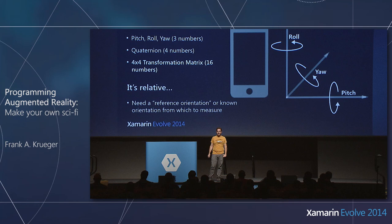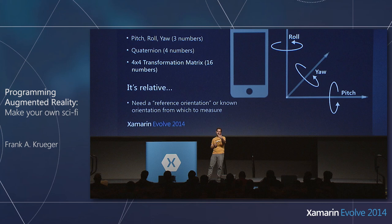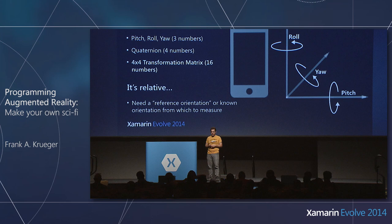Most programmers aren't familiar with the crazy mathematics behind orientations and rotations. We all like to think of Euler angles — pitch, roll, and yaw. These are easy to conceptualize, but once you start really angling the phone into awkward positions, these three values don't combine very well. All sorts of things creep up, like gimbal lock and general imprecisions when dealing with angles of this type.